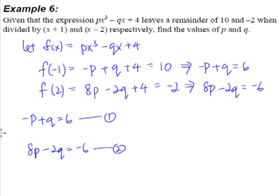When we take equation 1 multiplied by 2, we will get -2p + 2q = 12. We shall call this equation 3.